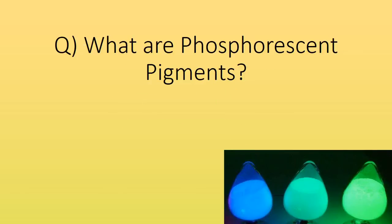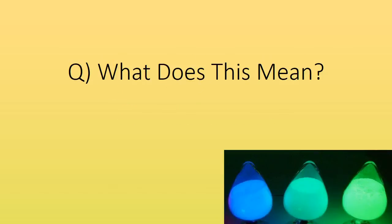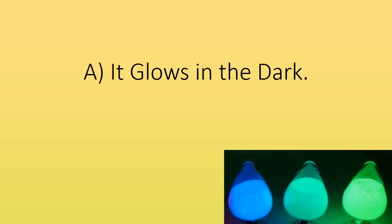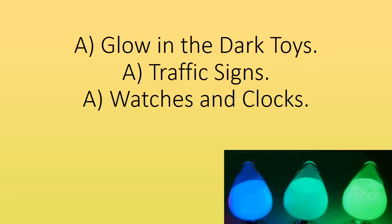What are phosphorescent pigments? Pigments that absorb light and store energy in their molecules. What does this mean? It glows in the dark. What uses are there for phosphorescent pigments? Glow in the dark toys, traffic signs, watches and clocks.